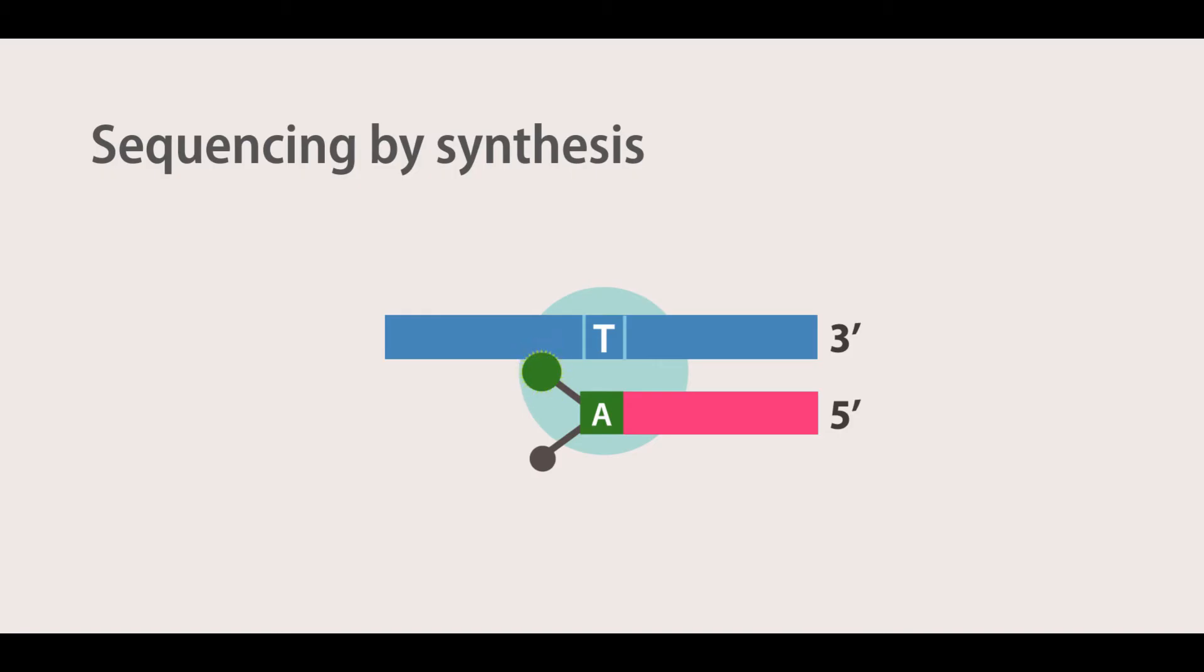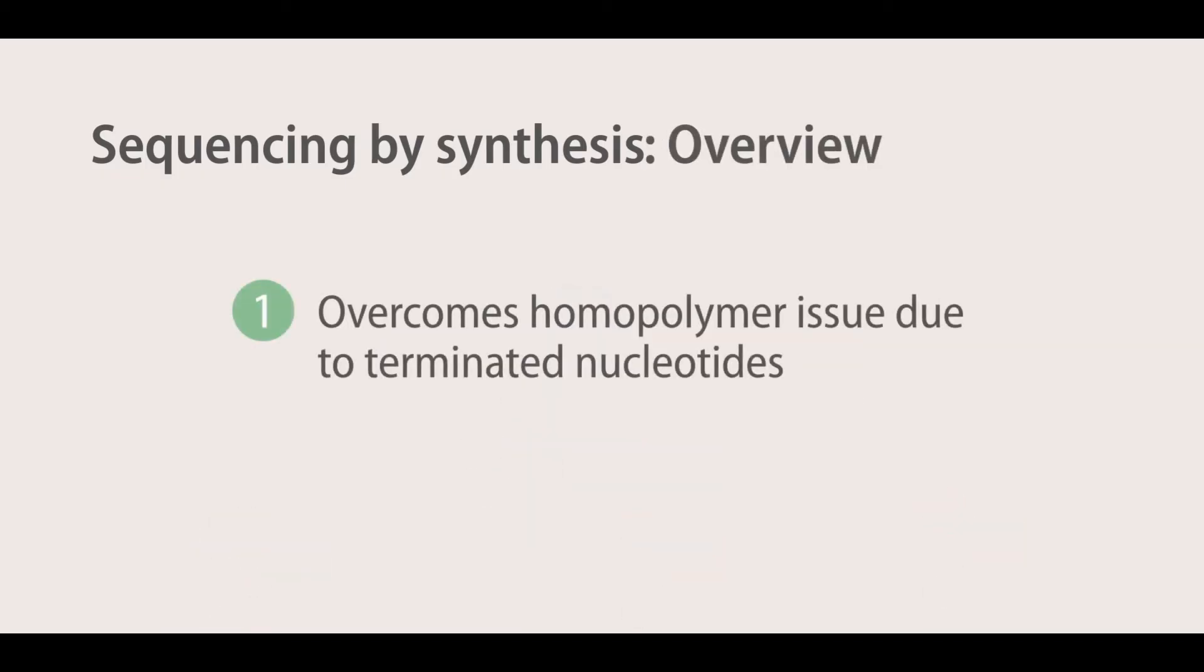The fluorescent signal is read at each cluster, and the terminator groups are then cleaved and washed away. This process is repeated until the sequencing reaction is complete. This system is able to overcome the disadvantages of the pyrosequencing system by only incorporating a single nucleotide at a time.